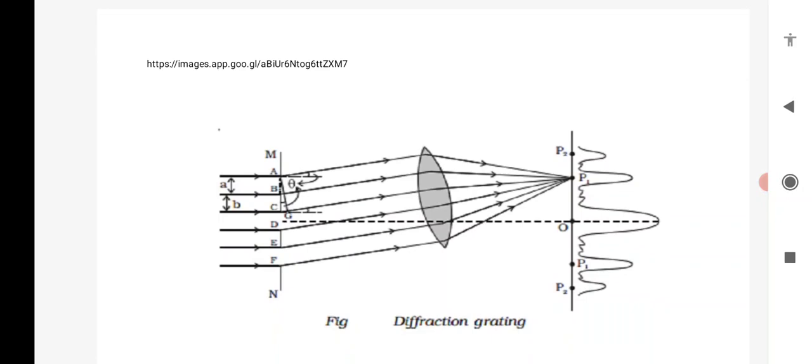The diffraction grating images are given in this figure. This curve gives the maximum intensity of the pattern.